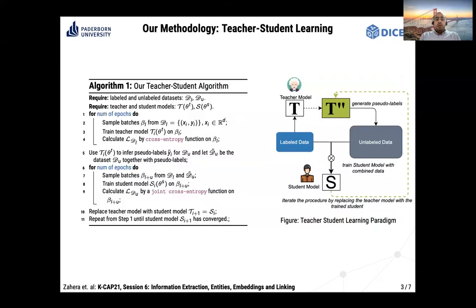Now, this is how the teacher-student learning algorithm works in our approach. We have two datasets: labeled data and unlabeled data. First, we train the teacher model on the labeled data for a number of epochs until the model converges. Then we use this trained teacher model to predict labels for the unlabeled dataset.